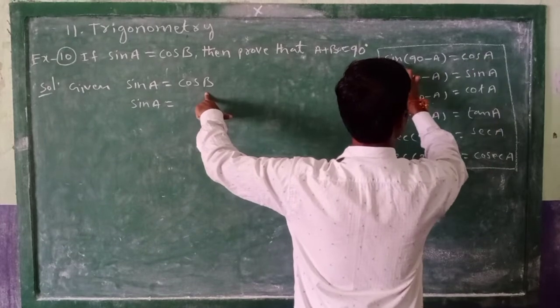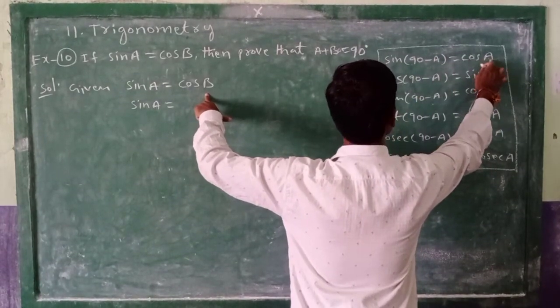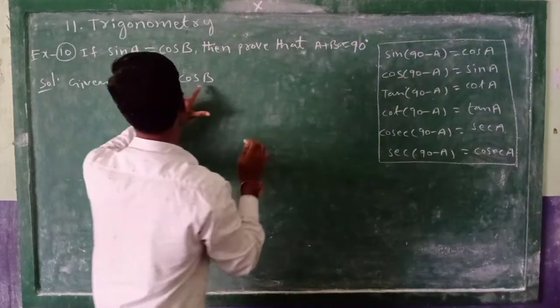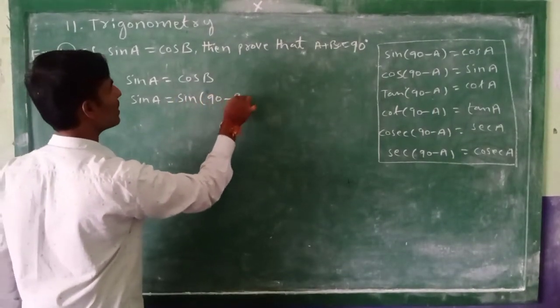So cos B we can write as sin(90 minus B). A plus B, then B right. So cos A we wrote now like here, sin of 90 minus B.